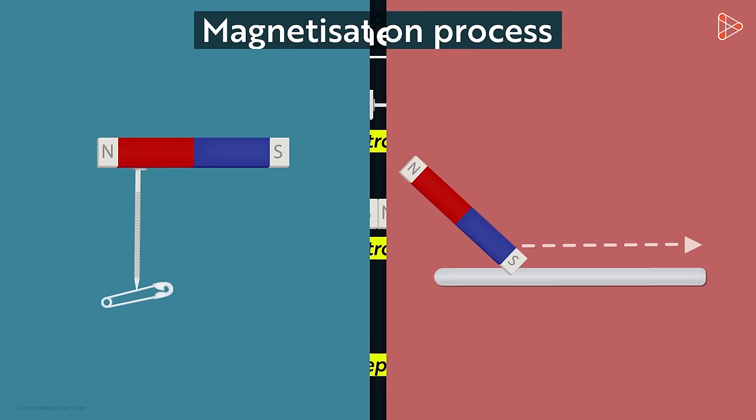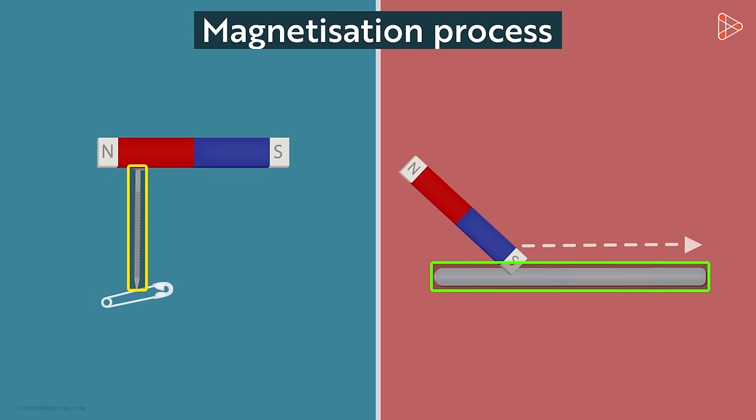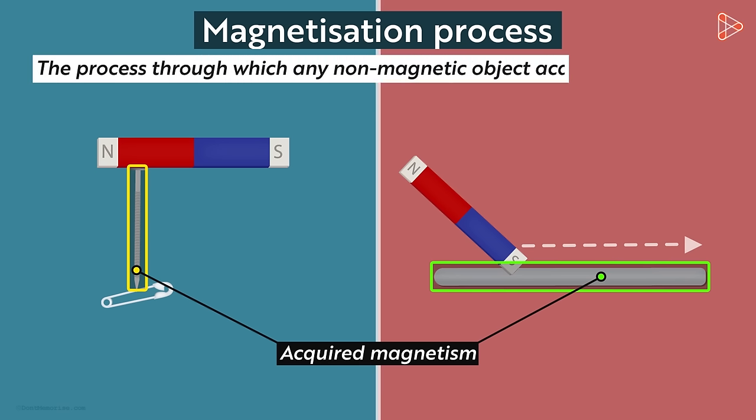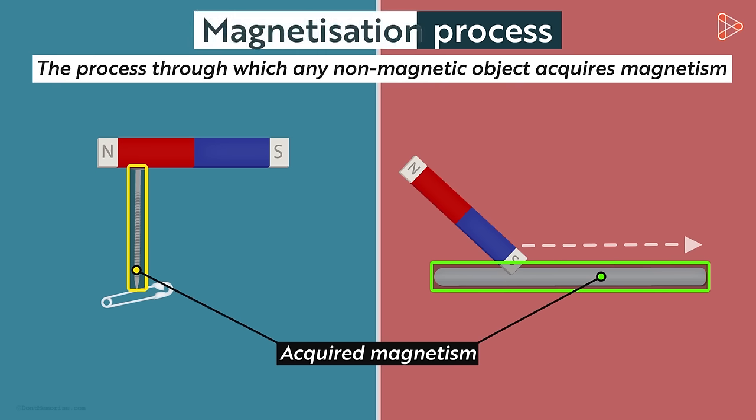Look at the example we saw. What is happening here is that the two objects are acquiring magnetism through their processes. So these objects weren't magnets, they acquired magnetism. This process through which any non-magnetic object acquires the property of magnetism is called magnetization.